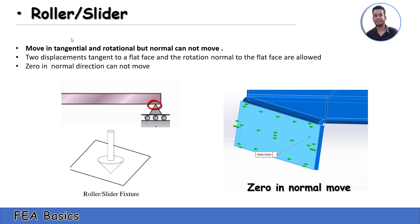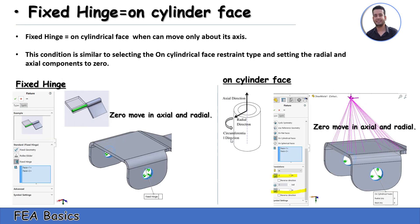Here is the roller or slider fixture type, which is used to prevent movement in the normal direction. We have zero movement in the normal direction, but the body can move in other directions.